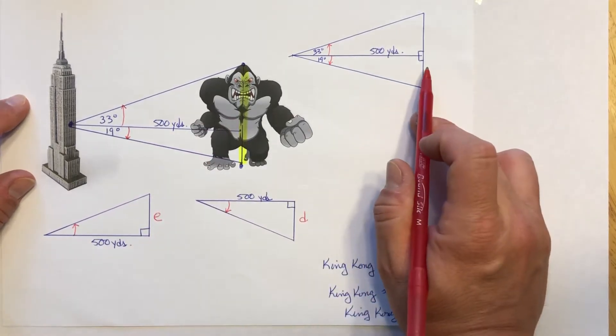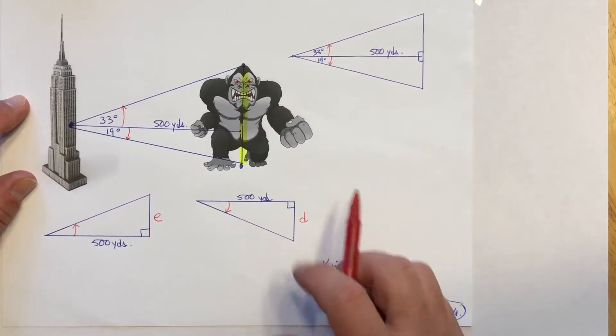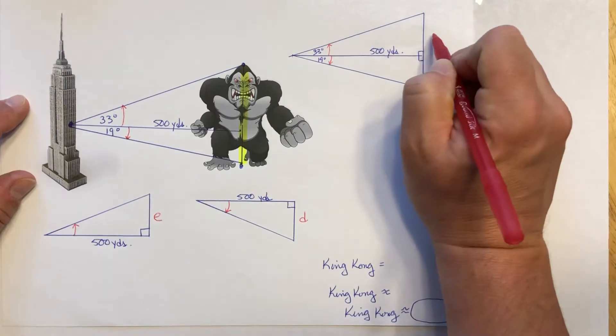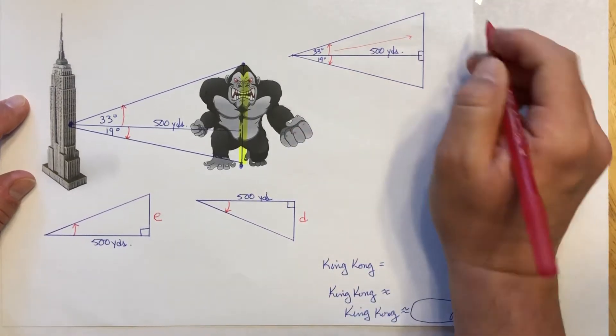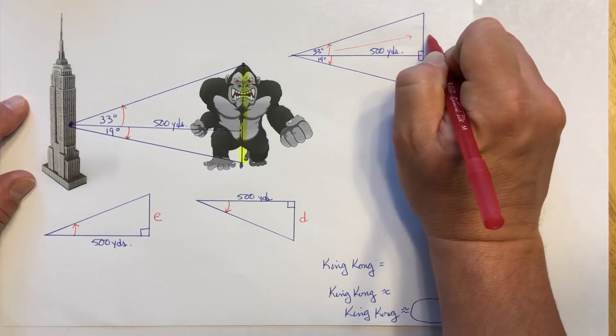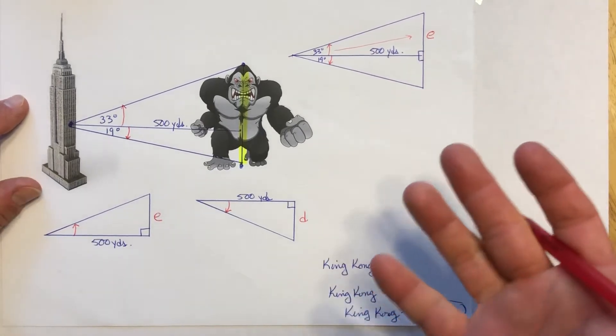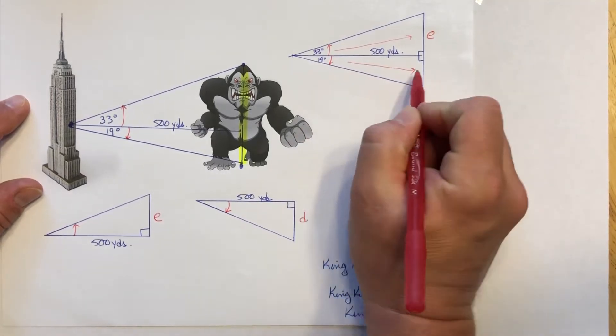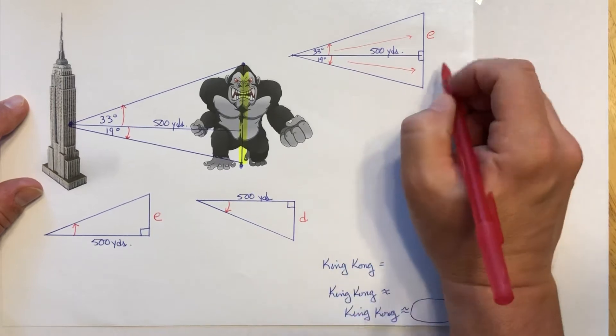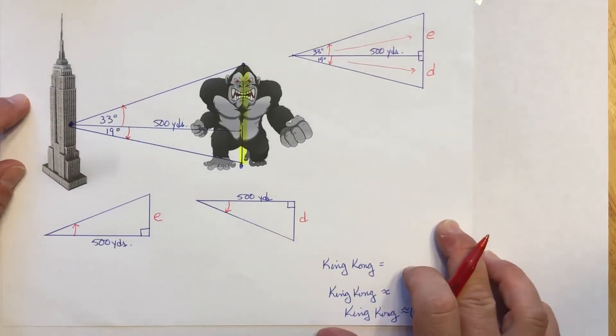So here's what I'm gonna do. I've drawn my triangle without the building or the King Kong, right? So what I'd like to do is I'd like to know the length straight across from 33 degrees. Since that's an angle of elevation I'm just gonna use the variable E. Feel free to use whichever variable you want. I also want to know the side length that is straight across or opposite of 19 degrees. I'm gonna use D since that's an angle of depression.